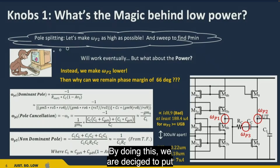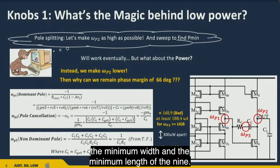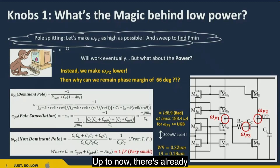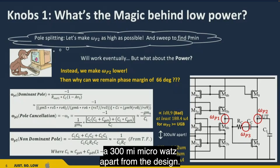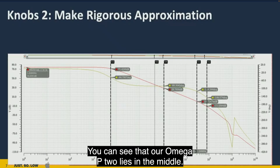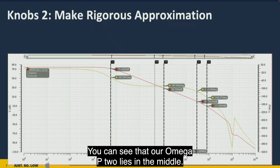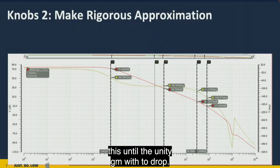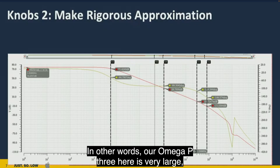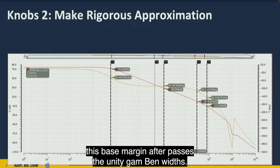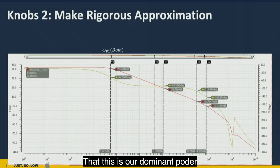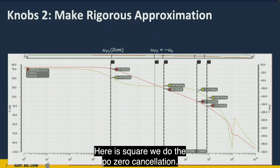We use minimum width and minimum length for M9, so only 7 µA passes through it, which already saves 300 µW in this part of the design. Looking at the Bode plot, omega_p2 lies in the middle, the dominant pole is at low frequency, and the phase response is very clean — it recovers before unity gain bandwidth. omega_p3 is very large, larger than the unity gain bandwidth, retaining the phase margin.